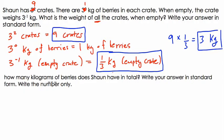How many kilograms of berries does Sean have in total? Well, again, we've got 9 crates, but this time we've got 1 kilogram of berries in each crate. So altogether, we have 9 times 1 kilograms of berries.